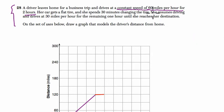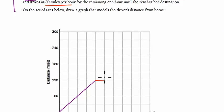Then what happens? She resumes driving and drives at 30 miles an hour. She's driving slower now. She gets a flat for the remaining one hour until she reaches her destination. So over the course of the next one hour, that's two and a half to three and a half, she's going to go a total of 30 miles.